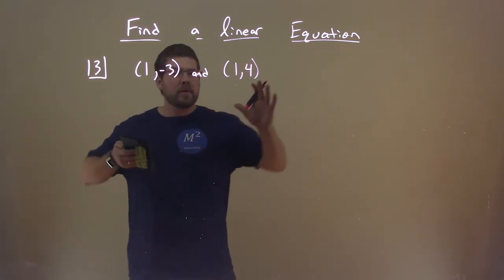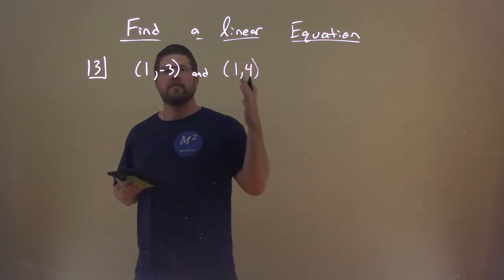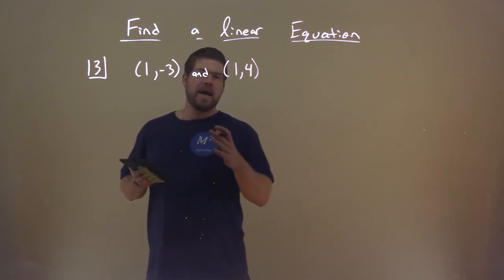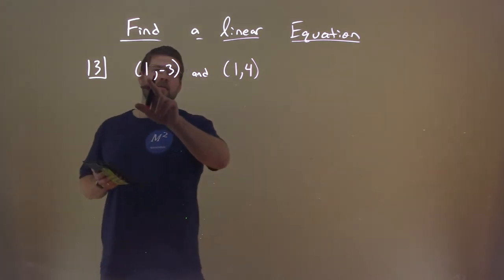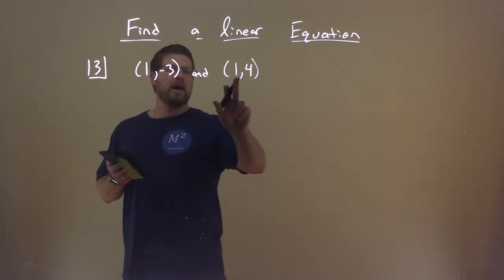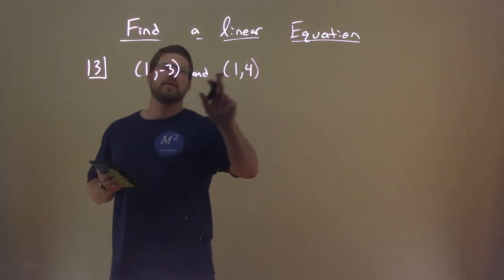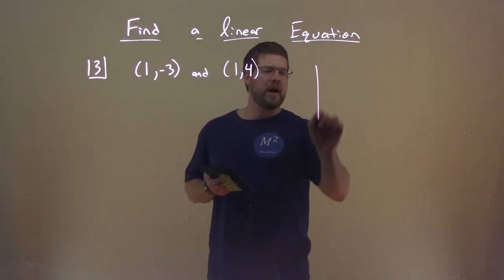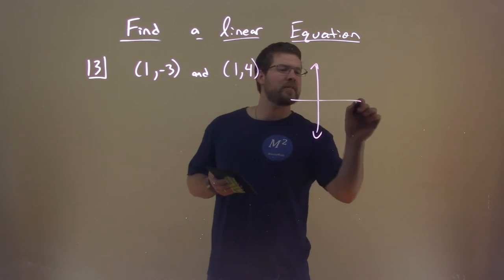Well, first thing, sometimes students just hop in and they start trying to find the slope here, and then they're going to get confused. And what they're noticing here is we have the same X value here. X is 1, X is 1 here. But this one says negative 3 and positive 4. So what would that look like, let's say, on a graph? Let's make a quick graph here, a quick sketch.